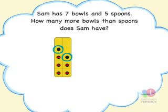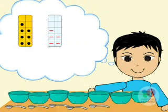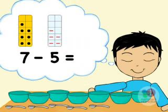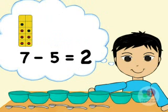So there are two more bowls than spoons. With this model, children see that they can take away one bowl for each spoon. Seven bowls in all, take away five bowls with spoons, leaves two bowls. Seven take away five is two.